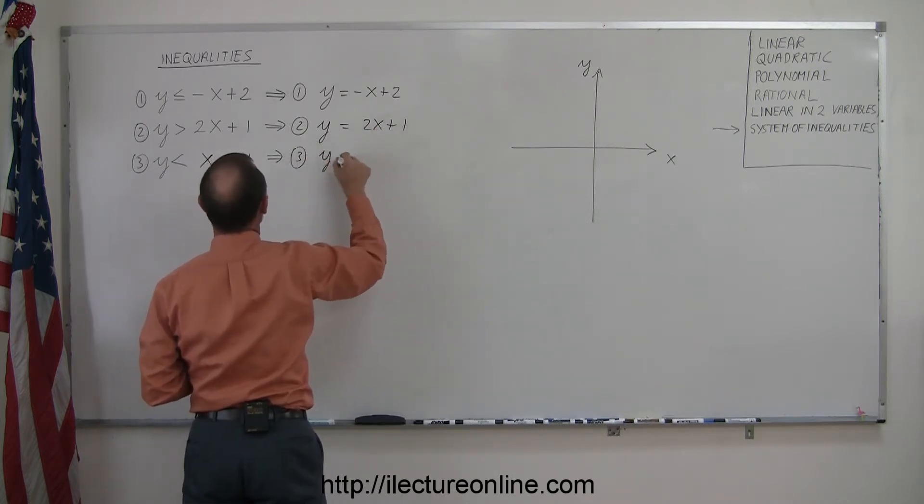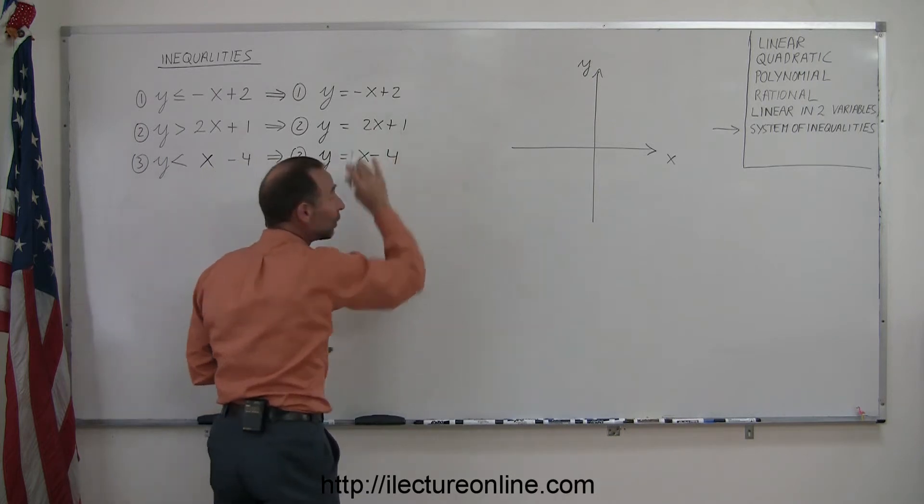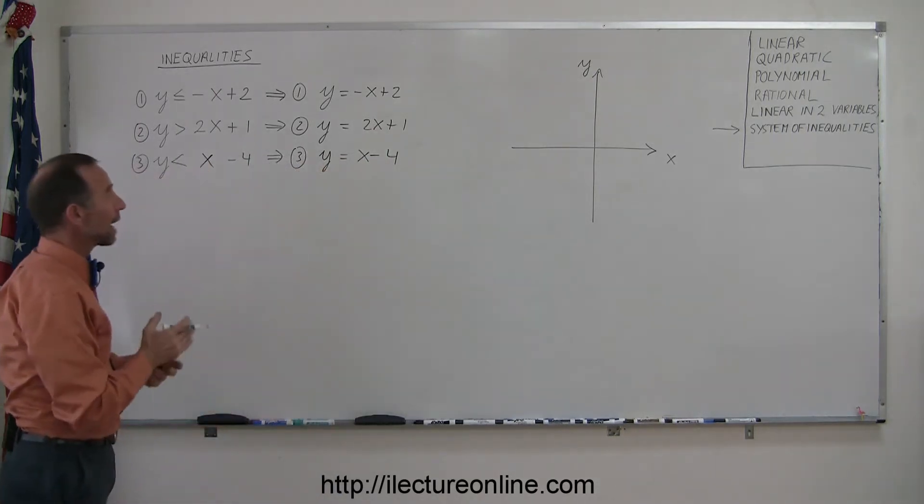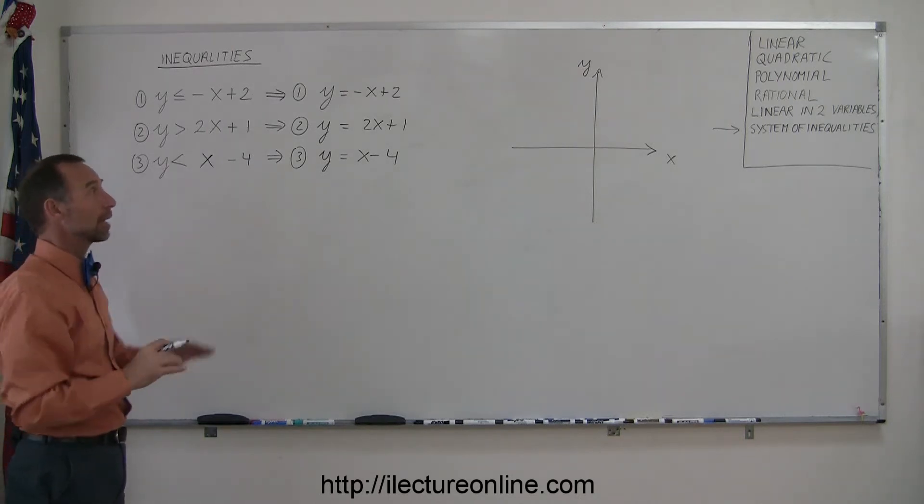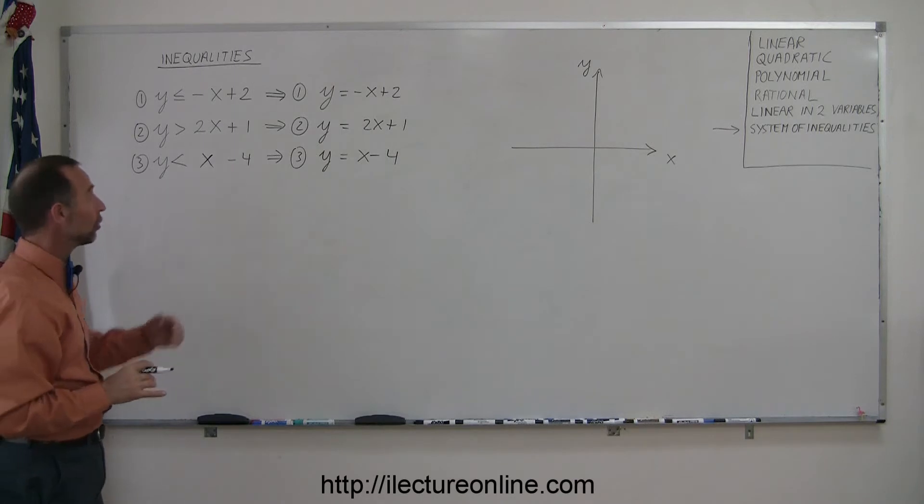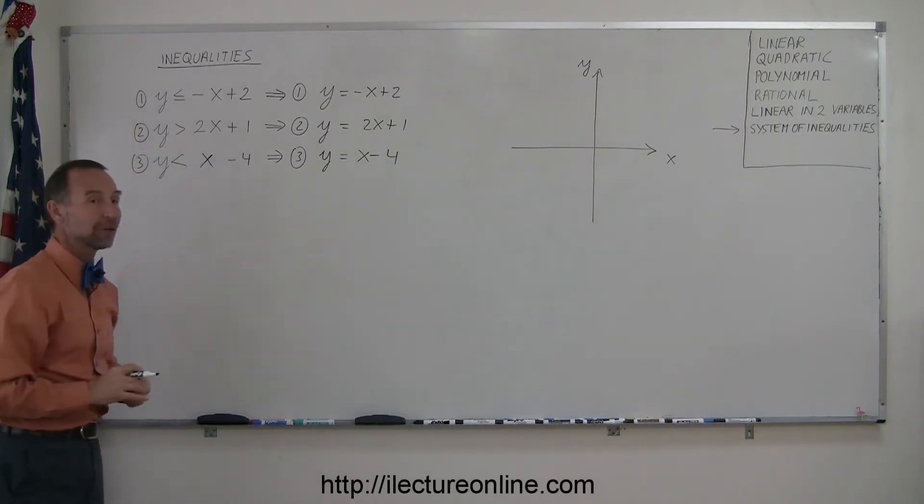And for inequality number three, we're going to graph y equals x minus 4. The reason why we do that is to find the boundary of each of the regions associated with these three inequalities. In other words, for inequality number one, we're going to have two regions on the x-y plane. One will satisfy, and one will not satisfy the inequality. We'll do the same for number two, and the same for number three.